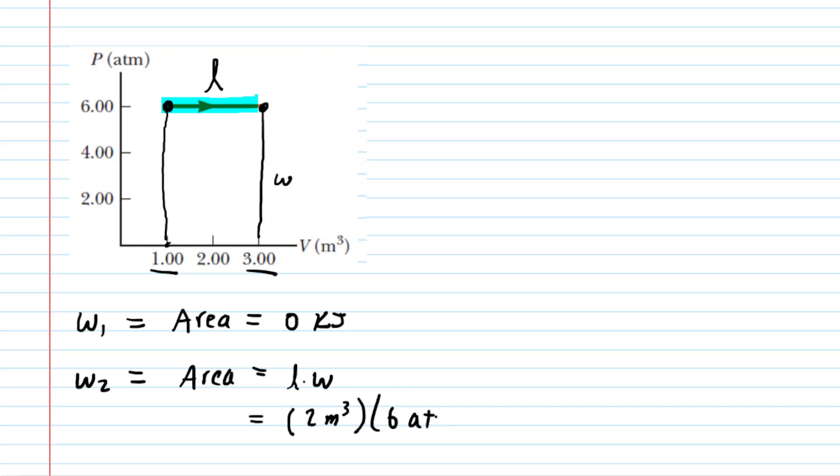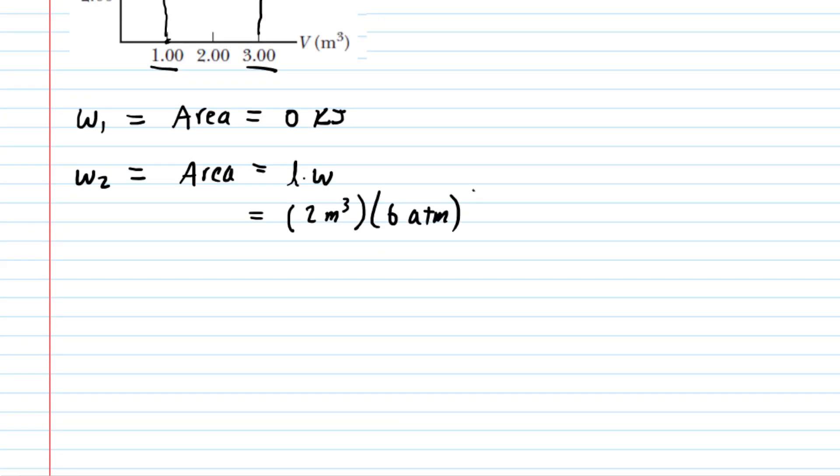Now what we need to do is convert the atmospheres into pascals. That way when we calculate the work, we'll have it come out in joules. So that's our next step here, is to convert the atmospheres to pascals. Hopefully we know that 1 atmosphere is equal to 1.013 times 10 to the power of 5 pascals. So when we set up that conversion, the atmospheres will cancel.